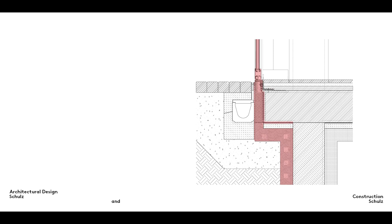As ever, both damp proofing and insulating layers must run continuously without break or interruption. Breaks or weak points in the insulation cause thermal bridges which, in the worst case scenario, can lead to the invisible formation of condensation and so damage to the fabric of the building.